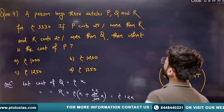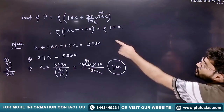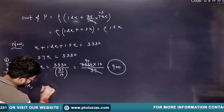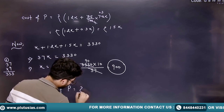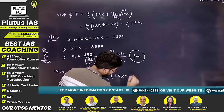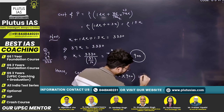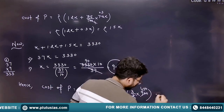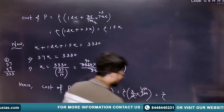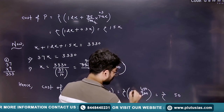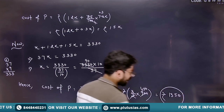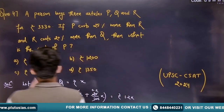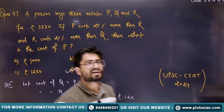We have to find the cost of P, and cost of P is 1.5X. So cost of P = 1.5 × 900 = (3/2) × 900 = 3 × 450 = ₹1,350. Looking at the options, cost of P is ₹1,350, so D is the correct answer.